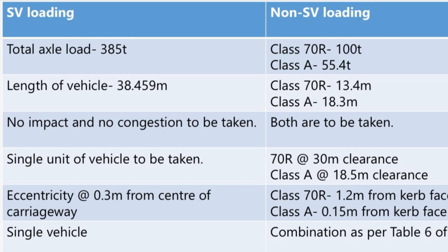1. Total Axle Load. In SV loading, the total axle load is 385 tons. This represents the extreme loading conditions typically used for evaluating bridge structures under heavy special purpose vehicles. However, in non-SV loading, two standard loadings are considered: Class 70R loading having a total axle load of 100 tons, and Class A loading having a total axle load of 55.4 tons.